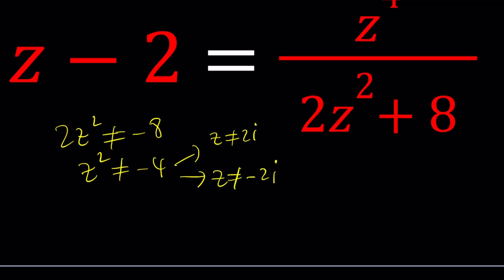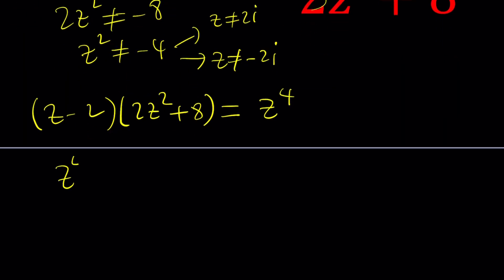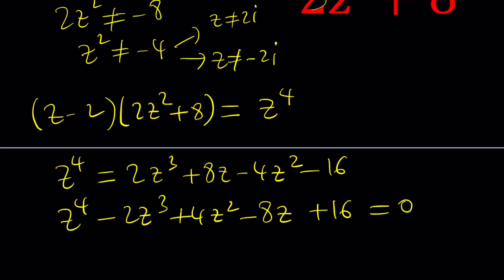Let's go ahead and solve under those conditions and cross-multiply. Multiply these two things. We're going to get z minus 2 multiplied by 2z squared plus 8 equals z to the fourth power. Let's write the z to the fourth first and distribute the left hand side. We're going to get 2z cubed plus 8z minus 4z squared minus 16. And now we're going to put everything on the same side. z to the fourth minus 2z cubed plus 4z squared minus 8z plus 16 is equal to 0.